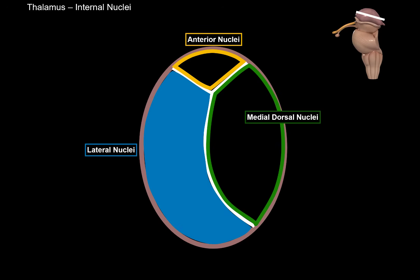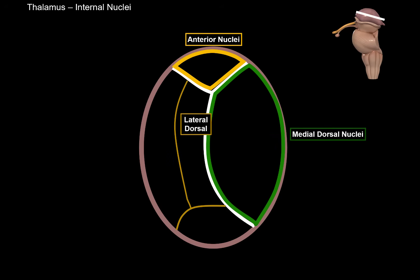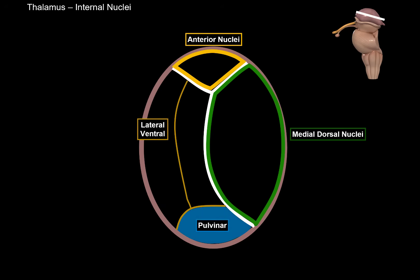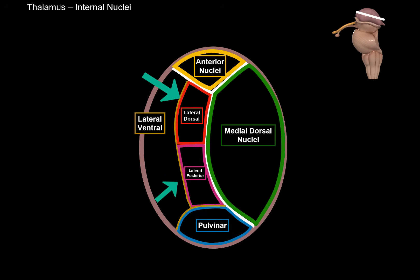The lateral group of nuclei is divided into the lateral dorsal row and the lateral ventral row, with the pulvinar at the back. The lateral dorsal row is divided into the lateral dorsal nuclei and the lateral posterior nuclei. The lateral dorsal, lateral posterior, and pulvinar are mostly involved in the visual and auditory senses — we'll revisit those when discussing the medial and lateral geniculate bodies.